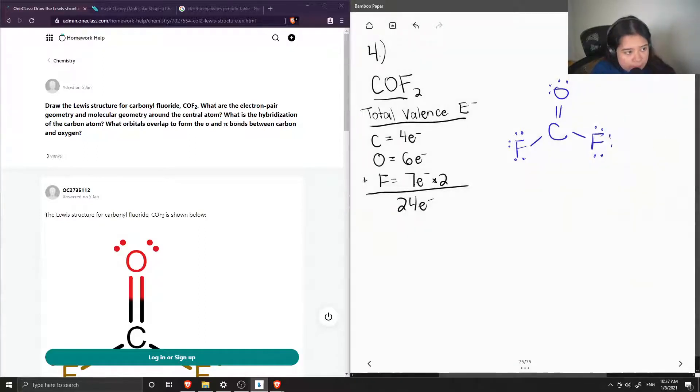So now when we want to find the electron and the molecular geometry around the central atom, we first need to count out how many lone pairs and how many bonded atoms there are with the carbon. So the carbon has zero lone pairs, and it has three bonded atoms, so the two fluorines and an oxygen.